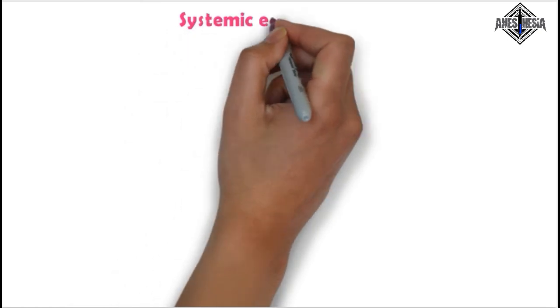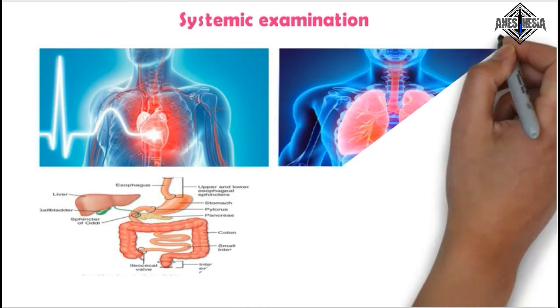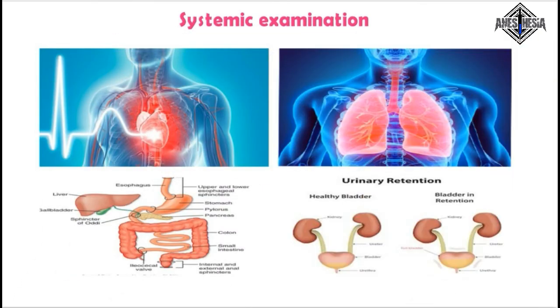The systemic examination includes the cardiovascular system, respiratory system, hepatic system, nervous system, abdomen, and spine.